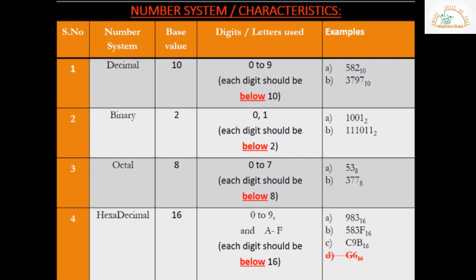Next is the binary number system, with base value 2. The condition is that each digit must be below 2. For example, 10001 — this is a binary number because each digit is below 2. You can't read this number as 'ten thousand and one'; it should be read as 1-0-0-0-1. The base of this number system is 2. Don't forget to mention the base value, otherwise it will be treated as a decimal number system.